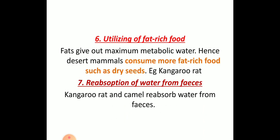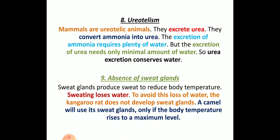They consume dry seeds and reabsorption of water from feces also takes place. Ureotelism is very important here. There are three types of nitrogenous excretion: ureotelic, uricotelic, and aminotelic. Aminotelic means ammonia-secreting, uricotelic means uric acid, and ureotelic means they secrete urea.